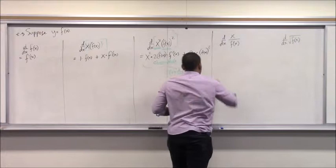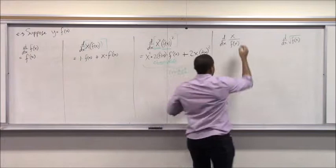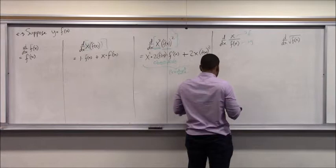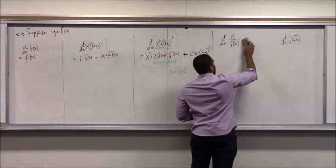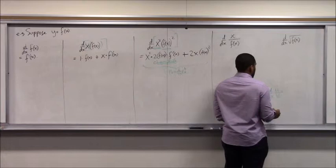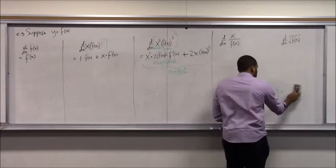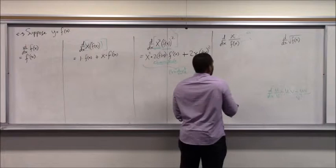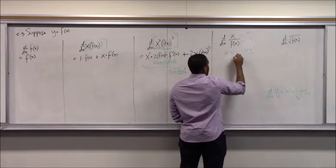What about differentiating x divided by f(x)? That's the quotient rule. Thinking of this as u equals x and v equals f(x), the rule is: u prime times v minus u times v prime over v squared. So that gives us: 1 times f(x) minus x times f prime, all over f(x) squared.